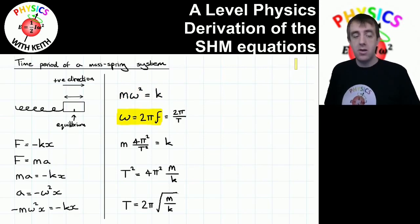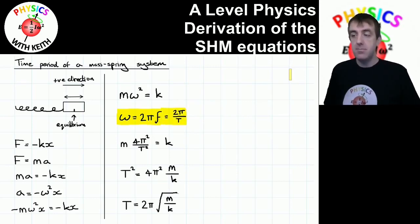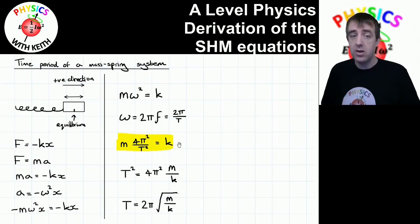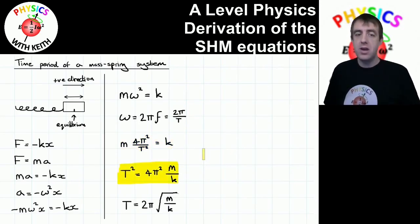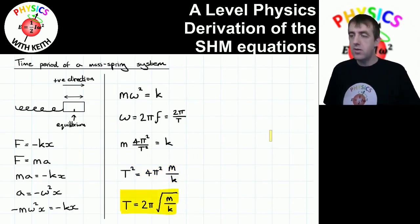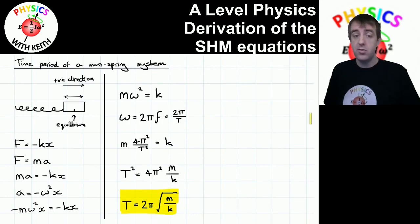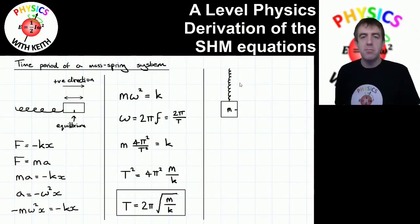Assuming uniform mass, we use Newton's second law: F = ma. Equating F = −kx with F = ma and substituting the expression for acceleration in SHM (a = −ω²x), then dividing through by −x, we get mω² = k. Since ω = 2πf = 2π/T, substituting gives m × 4π²/T² = k. Rearranging for T² and taking the positive square root yields the expression for the time period of a mass-spring system.